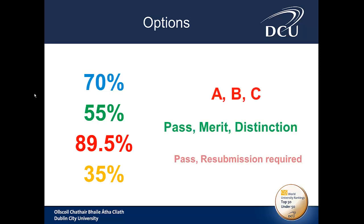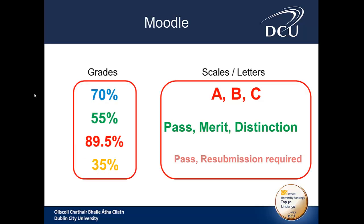The typical student is familiar with A, B and C, but in college you may use the terminology pass, merit and distinction, or another representation that's used quite a lot is simply a pass or a fail — a pass or resubmission required. In Moodle, the terminology to distinguish between these two examples is grades for the marks, and scales or letters for representation of the marks.